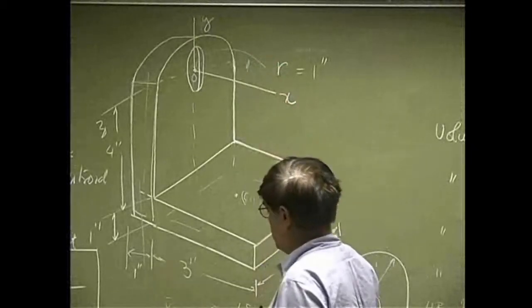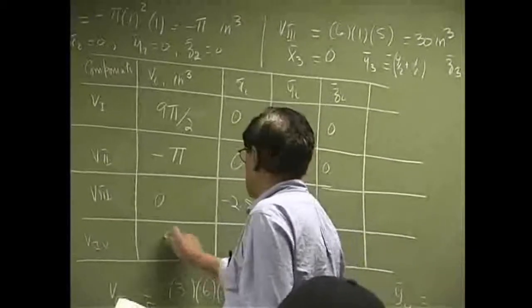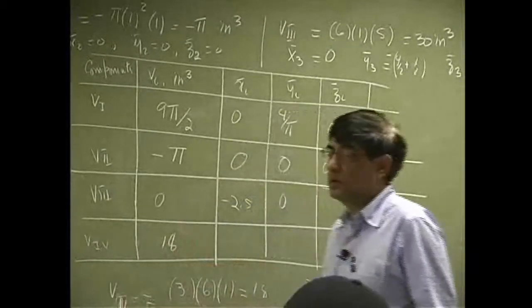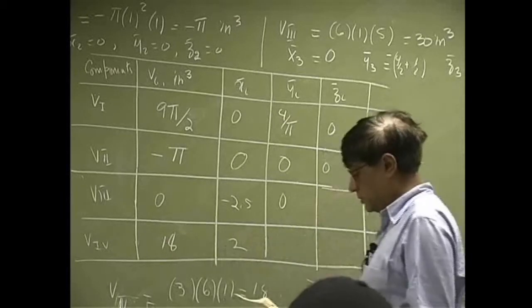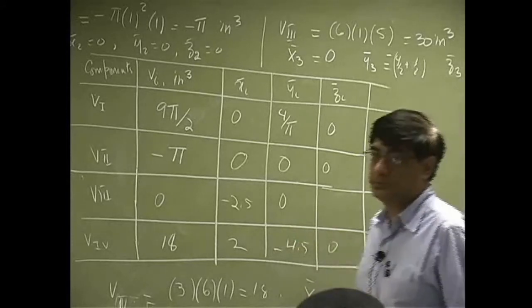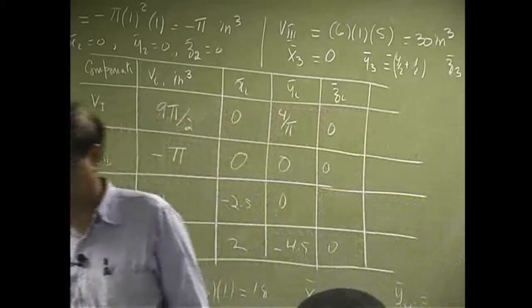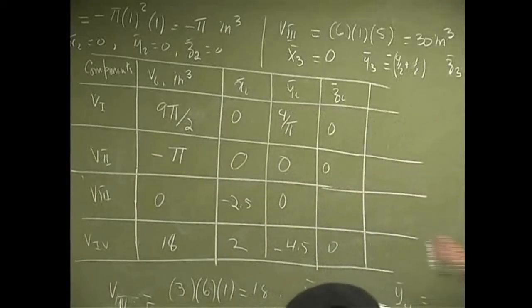So the Y going up is positive. This is going down, so attach a negative sign. This came out to be 18. Then for X we got 2, then you have negative 4.5 and 0. Then we need three more columns.